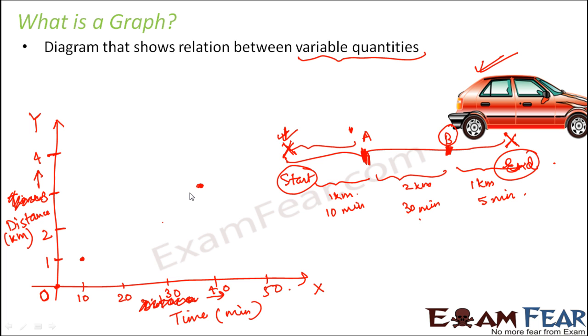And finally, when it reaches, it had traveled how many kilometers? Total 4 kilometers. The entire distance. And the total time taken was 45. So 4 kilometers and 45. Somewhere here. So, and then you join all these points, something like this.